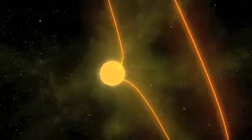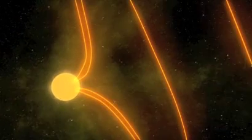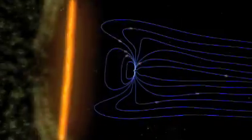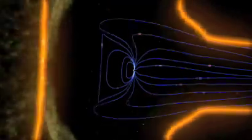Here we found that the particles get in, the plasma, the particles from the sun, get into the Earth's magnetic field when the sun's magnetic field points northward.